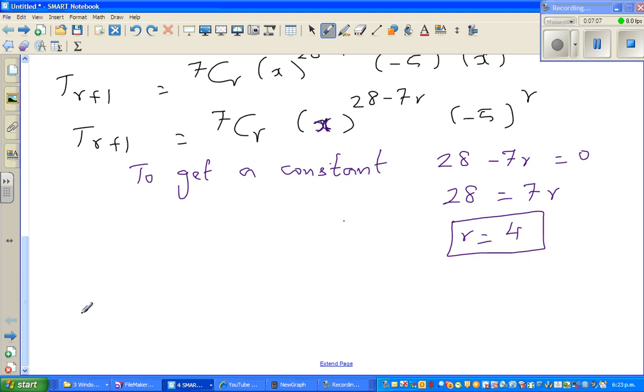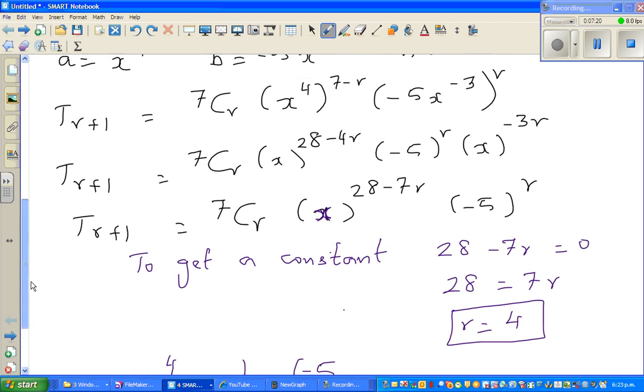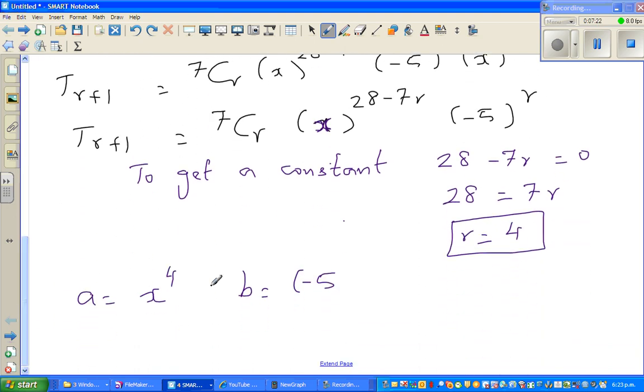So now this becomes t, if, so let me rewrite. What's the a? a is x to the power 4. What is b? b is minus 5, let me go back. b is minus 5x to the power negative 3. Your n is 7 and your r is 4.